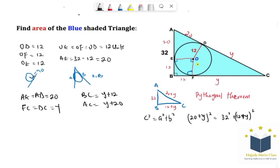So expanding this I'm going to have Y squared plus 40Y plus 400 equals 1024 plus Y squared plus 24Y plus 144.